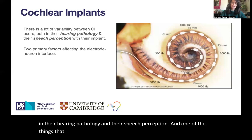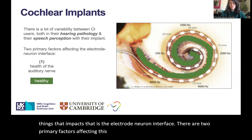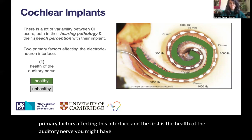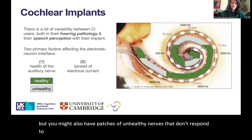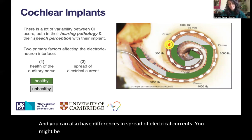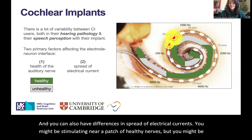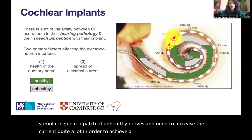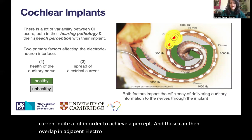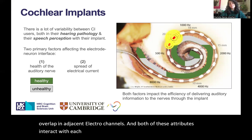One of the things that impacts that is the electroneuron interface. There are two primary factors affecting this interface. The first is the health of the auditory nerve — you might have healthy nerves along the entire cochlea, but you might also have patches of unhealthy nerves that don't respond to electrical stimulation very well. You can also have differences in spread of electrical currents — you might be stimulating near a patch of unhealthy nerves and need to increase the current quite a lot in order to achieve a percept, and these can overlap in adjacent electrode channels. Both of these attributes interact with each other and impact the efficiency of delivering auditory information to the nerves through the implant.